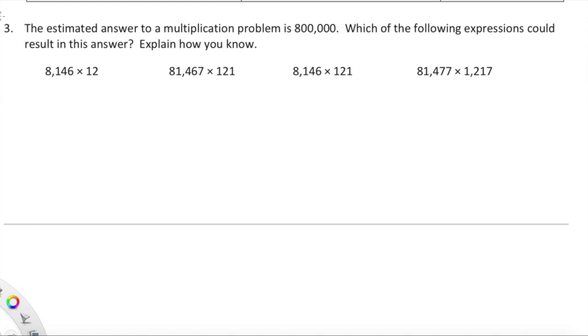Okay, kiddos, this one is interesting here in lesson two. Let's look at this problem. The estimated answer to a multiplication problem is 800,000. Wow, it's a pretty big number, fairly close to 1 million. Which of the following expressions could result in this answer? Explain how you know. We can explain how we know using numbers, pictures, or words. I'm going to explain how I know using numbers because we are in math and numbers are the language of mathematics. So what I'm going to do is to round each of these factors within each expression and see if the product is close to 800,000.